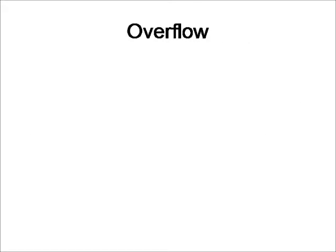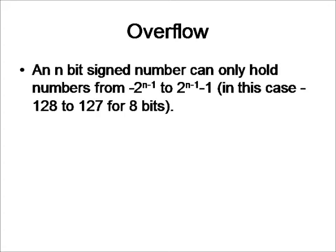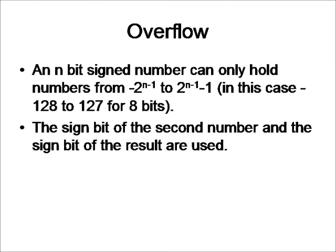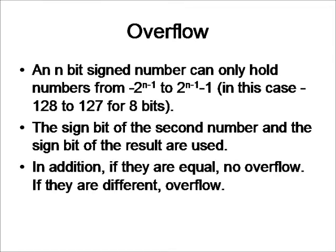Now, in some cases involving addition and subtraction, you will come across a number that is too big for the number of bits that it holds. This is called overflow. The thing is that an n-bit signed number can only hold numbers from negative 2 to the n minus 1, the number of bits that make a number, to 2 to the n minus 1 power minus 1, or in this case, negative 128 to 127 for 8 bits. To determine overflow, the signed bit of the second number and the results are used. In addition, if they are equal, there is no overflow, and there is overflow if it is different.